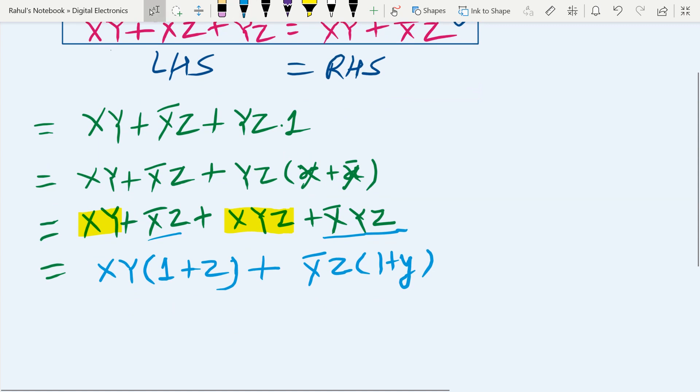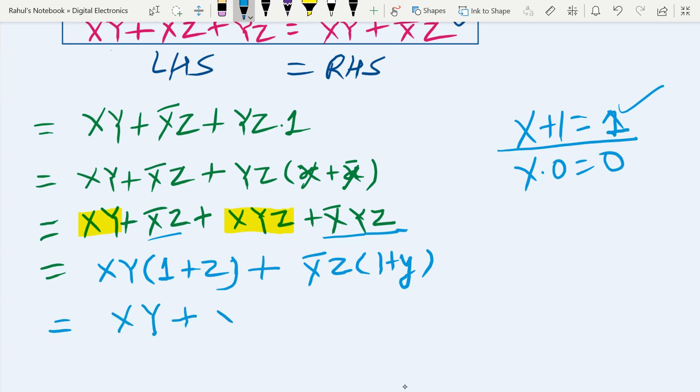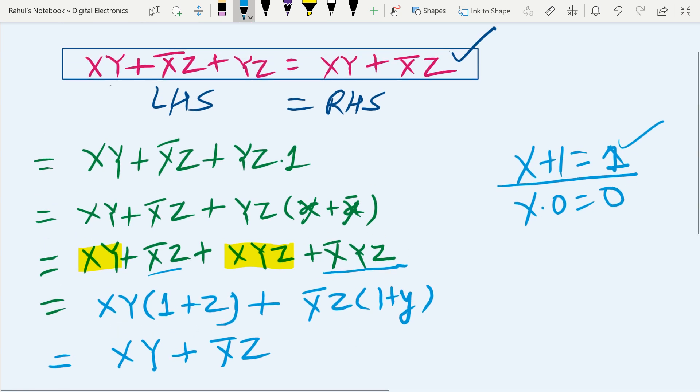Now anything we are adding with one - if we are adding any boolean variable then what we get? We have learned that x plus one is nothing but one, and x dot zero is nothing but zero. So one plus x, one plus y, one plus z - any boolean variable if we are adding one it becomes one, so it is nothing but xy plus x bar z.